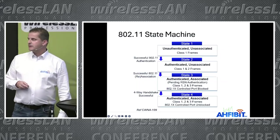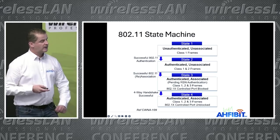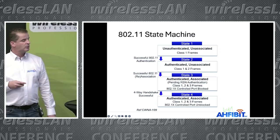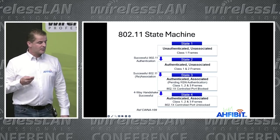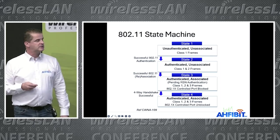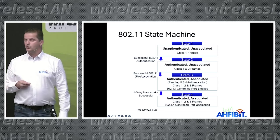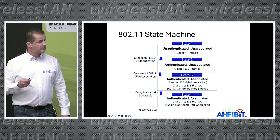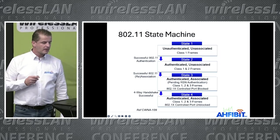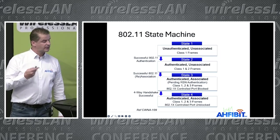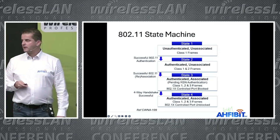Going back to the state machine — what we learned in CWA courses — we have to go through four stages: state 1, state 2, association, authentication. But it's most of the time state 3 that takes a long time, because we have to connect to our RADIUS server. In my case I used a JumpCloud server in the cloud.